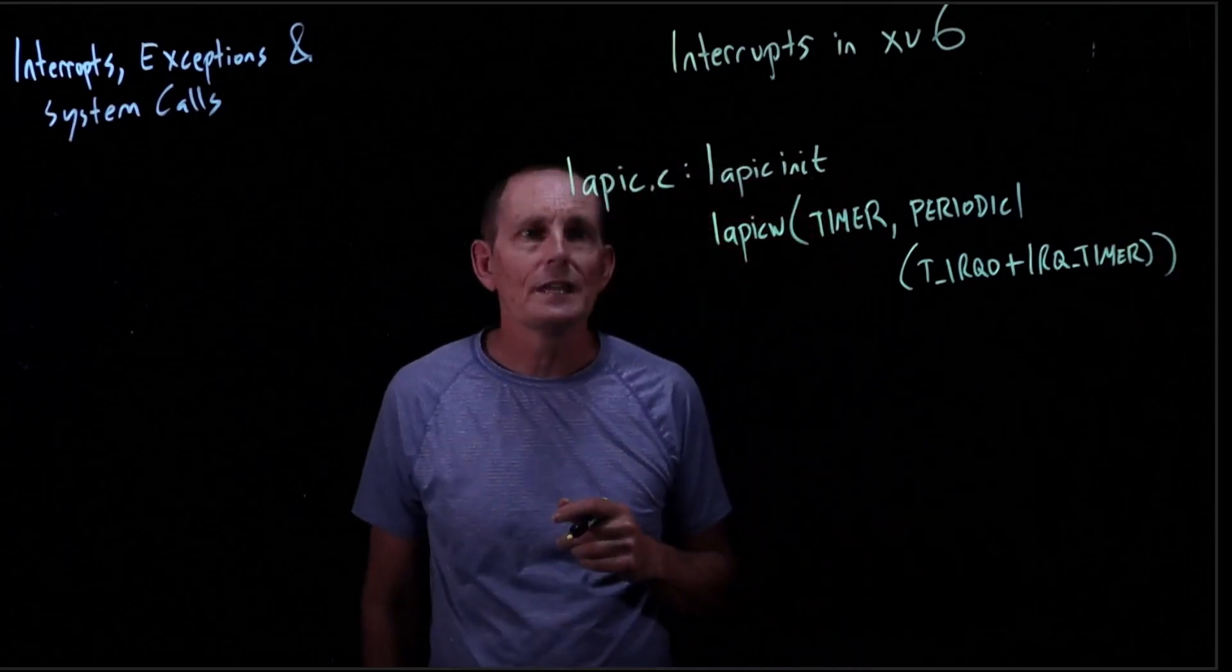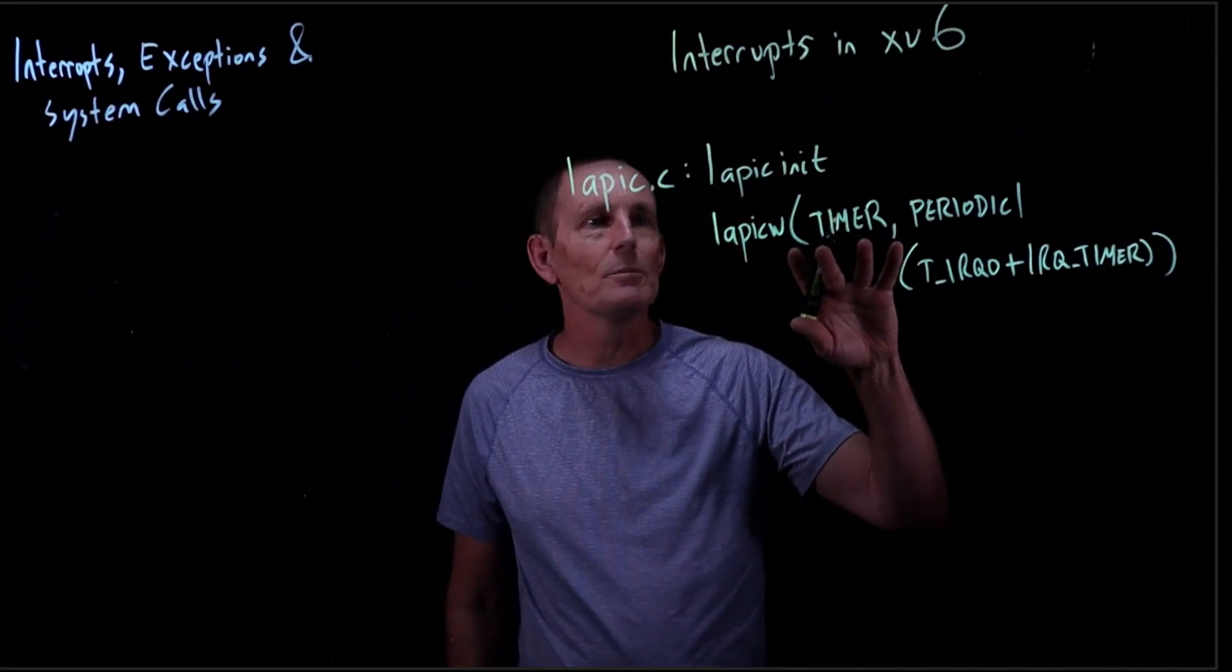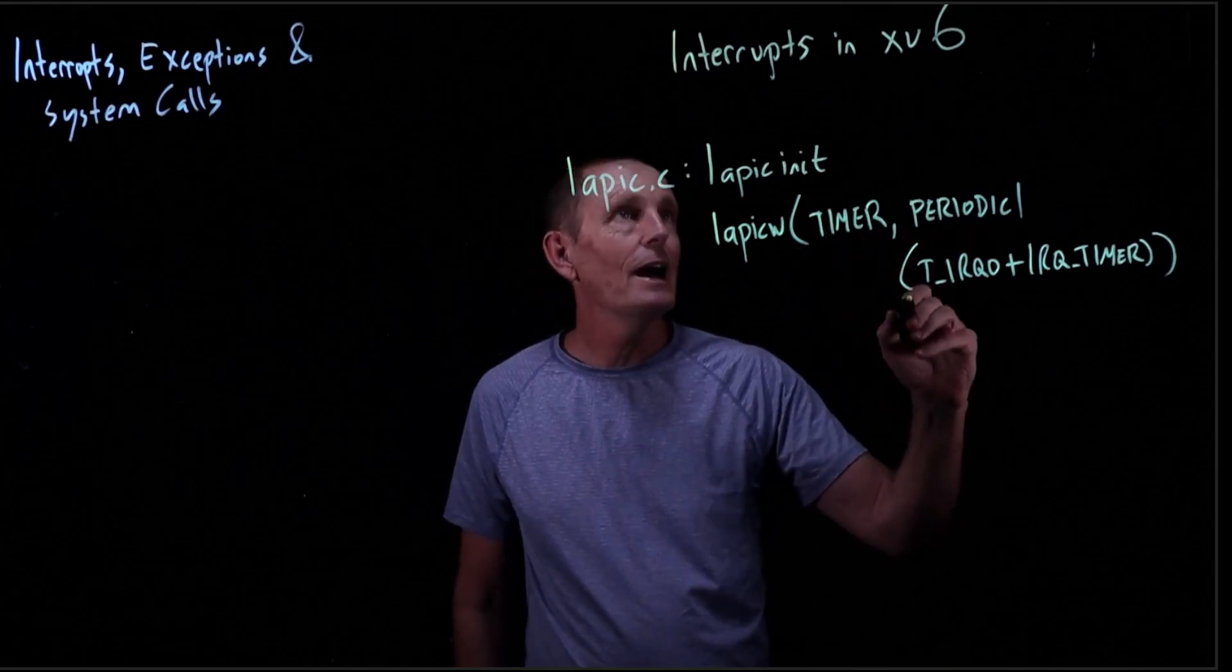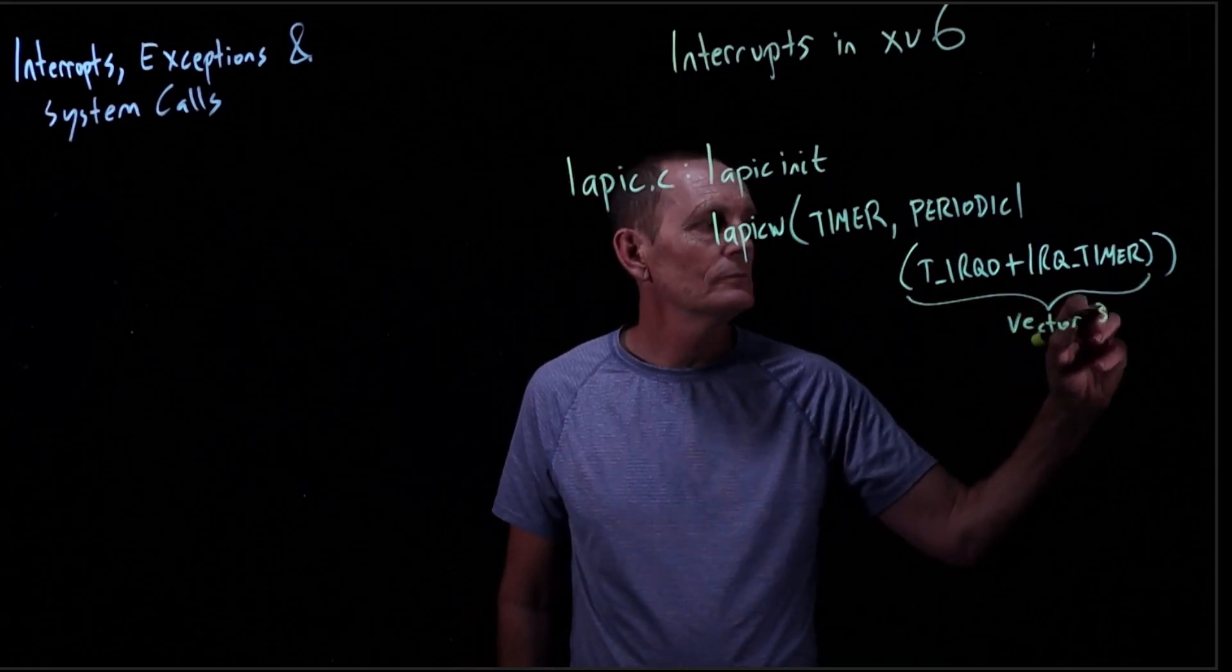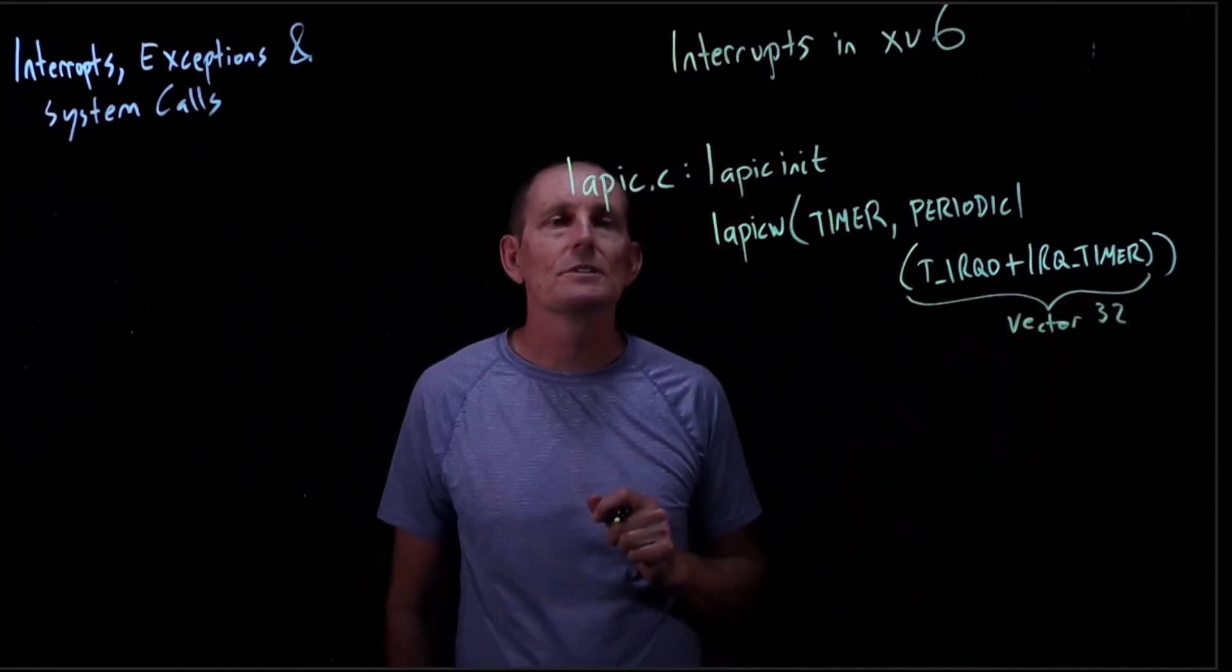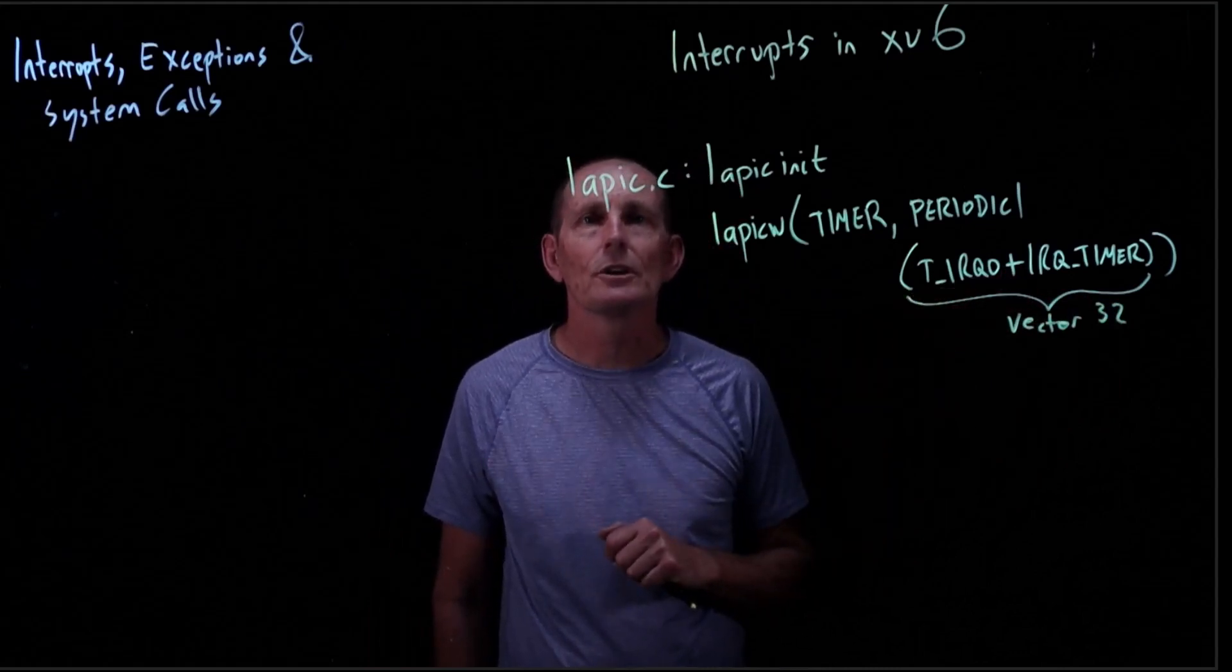So what's happening is we call lapic w. We say we're interested in the timer interrupt. We want it to happen periodically, and we want it to use this vector. So that means it'll go to interrupt descriptor table entry 32 in order to determine what code's execute.